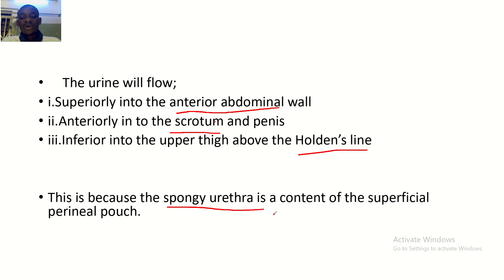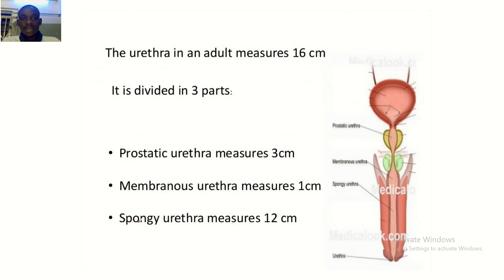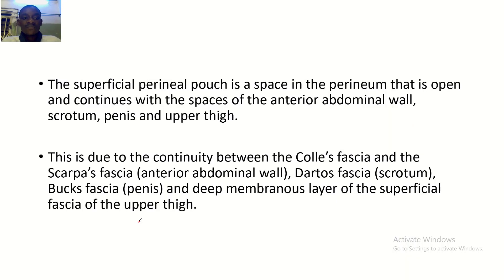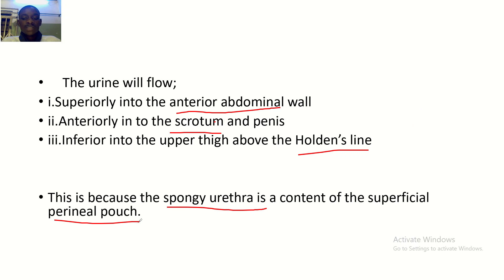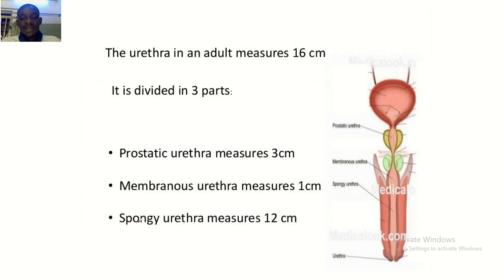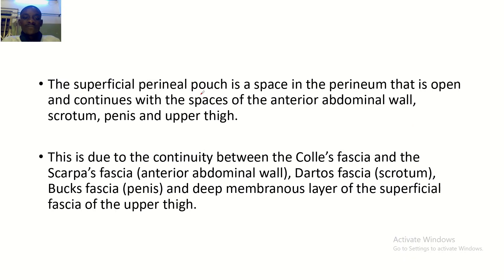This is because the spongy urethra is a content of the superficial perineal pouch. The superficial perineal pouch is a space in the perineum that opens and continues with the spaces of the anterior abdominal wall — that's why urine will flow there, as well as to the scrotum, penis, and upper thigh.